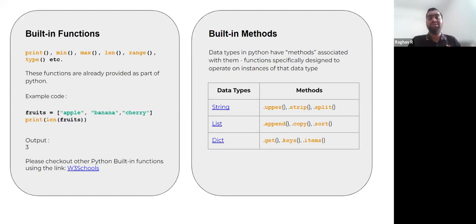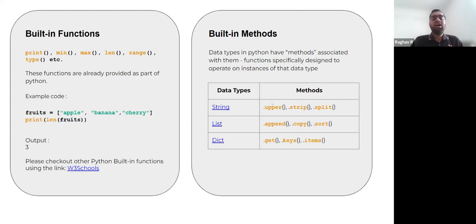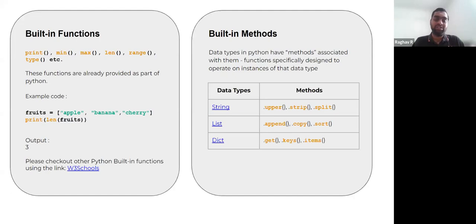The functions related to a particular class or object are called methods. Methods are also basically functions, but they have a different purpose. For string data types, we have different methods like upper, strip, and split. For every data type, there are some inherent methods. We cannot list all of the methods here, so you should explore these methods and know which method is present for which data type, so that when the situation comes, you are able to choose the appropriate method.